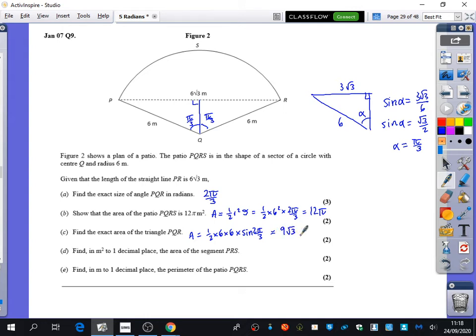And then it says find in meters squared the segment PRS, which is this bit here. How do you find the area of that? The segment minus the triangle. The sector minus the triangle. So the area of this is going to be the 12 pi, which is the whole thing. If we remove the triangle which is nine root three, we then come up with the answer. And 12 pi minus nine root three is how much? 22.1. And it's in meters so it's meters squared.